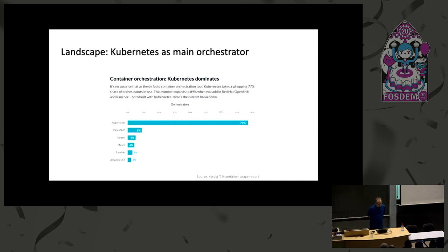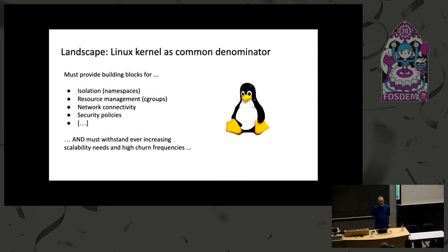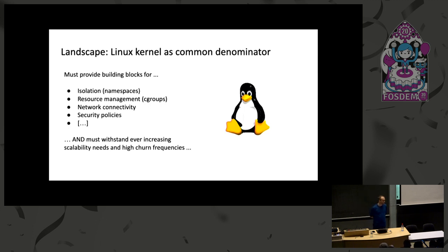Including OpenShift and Rancher, it's 89%, which is quite a vast majority. As a common denominator, a common base platform for all of this is of course the Linux kernel, and it has to provide all the building blocks for isolation in terms of namespaces — network namespaces, and recently the time namespace got merged into the kernel — and also for resource management, which is done through cgroups.